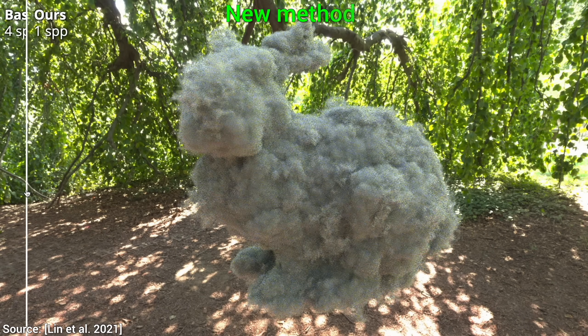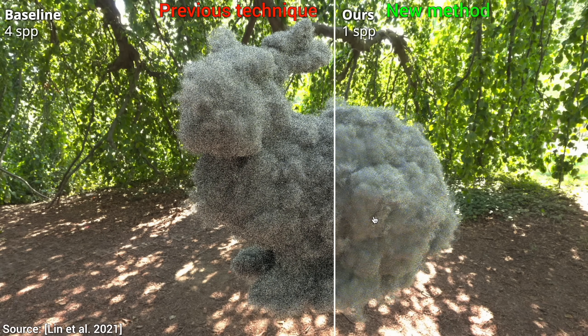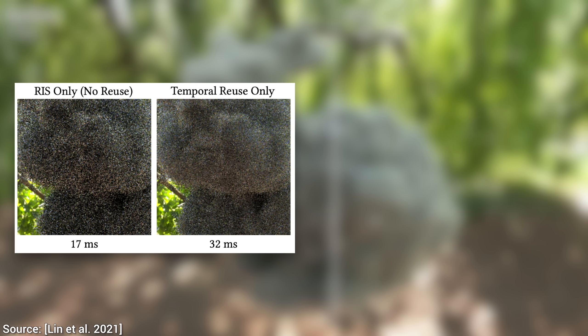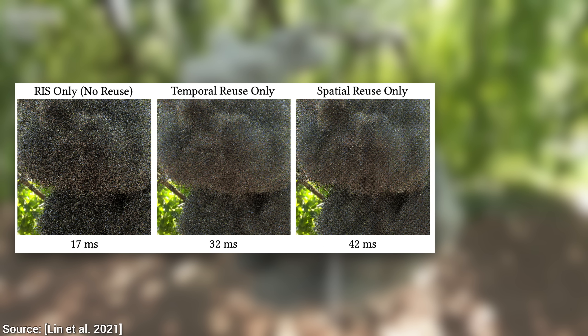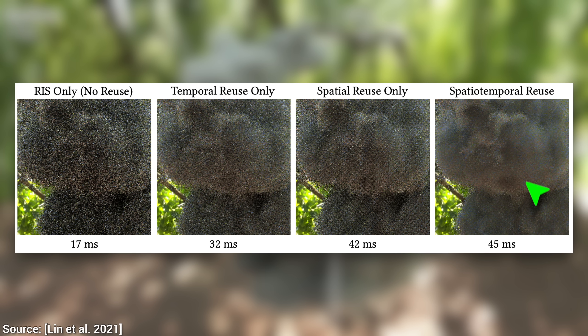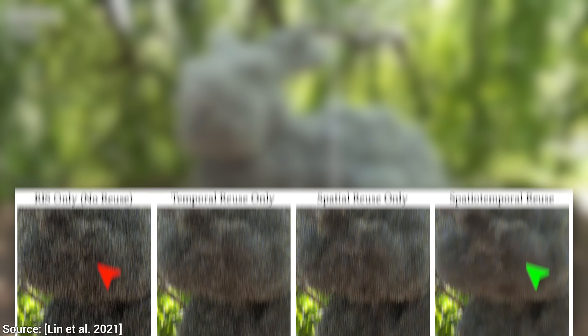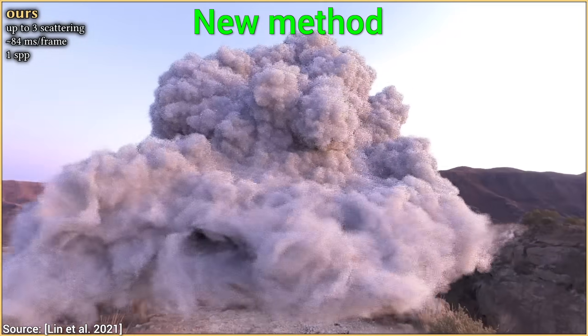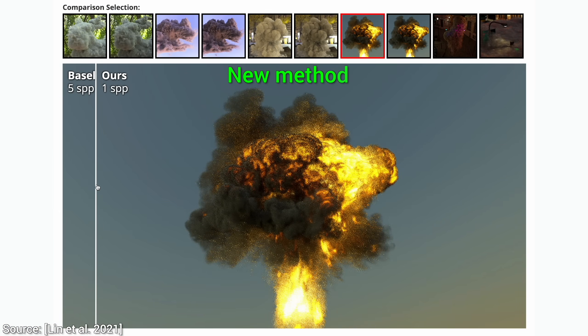This technique also pulls off all this wizardry by trying to reuse information that is otherwise typically thrown away. For instance, with no reuse, we get this baseline result, and if we reuse information from a previous frame in the animation, we get this — that is significantly better than the baseline. If we reuse previous rays spatially, that is also an improvement. So our question is, are these different kinds of improvements? Let's add them together, and — oh yes — now this is what we are here for. Look at how much more information there is in this image. So now, even these amazing volumetric scenes can be rendered interactively. I am out of words. What a time to be alive!